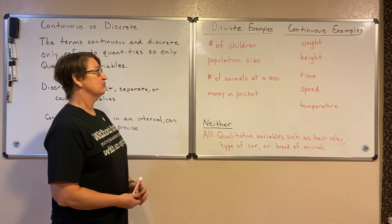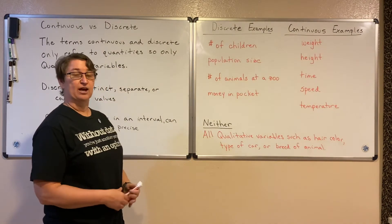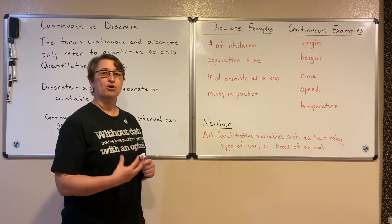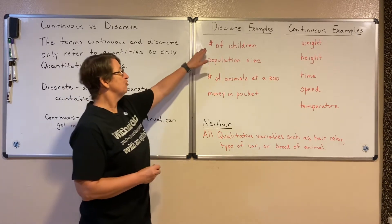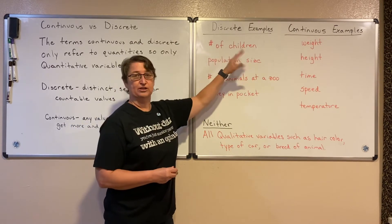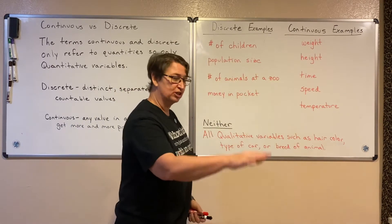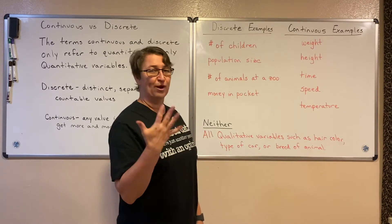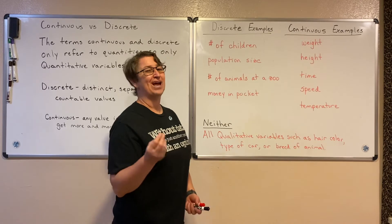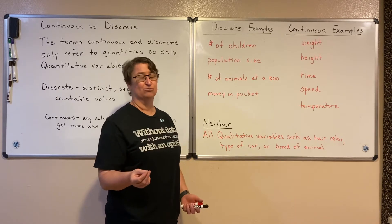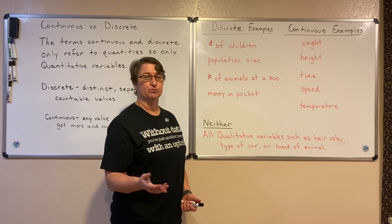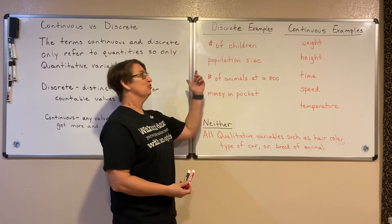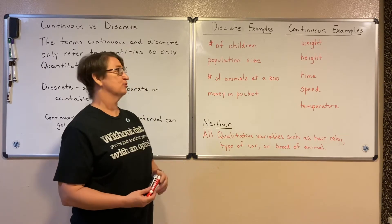Here are some examples of discrete data. Remember that discrete is distinct, separate, or countable data. For example, the number of children that you have — you can actually go out and count them. You have three, or five, or seven children. You don't have two and a half children — well, maybe if you're counting your husband — but you can actually count each one of those people. So you have a countable number of children.